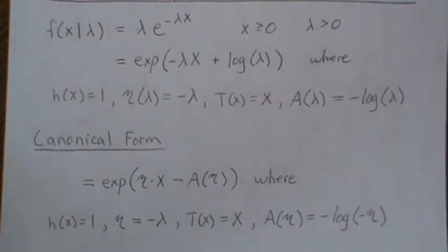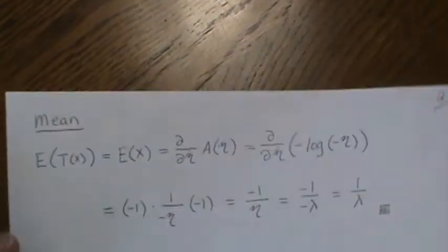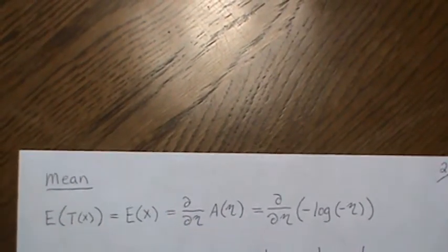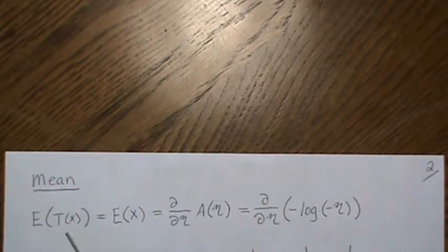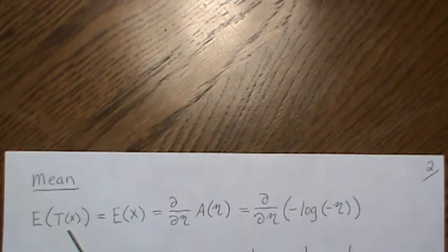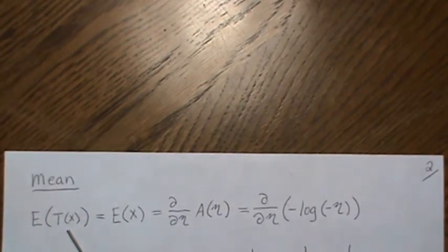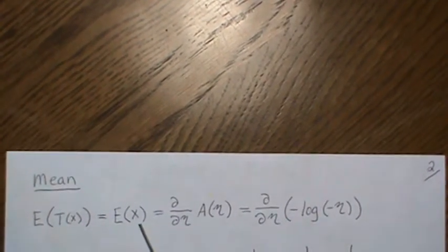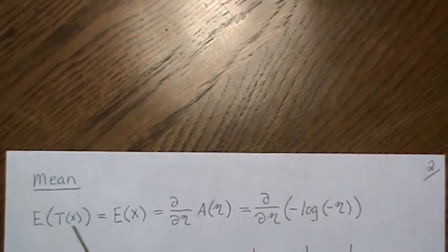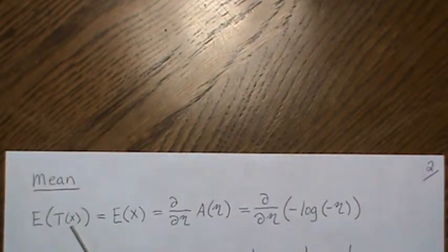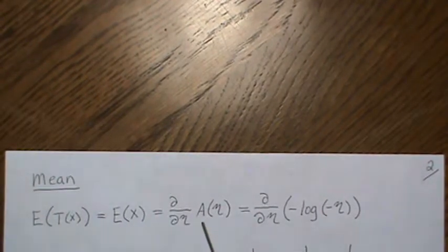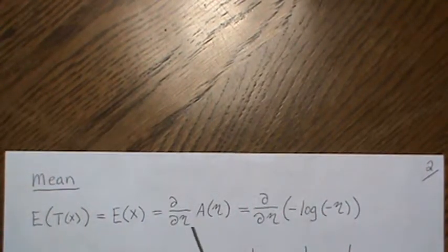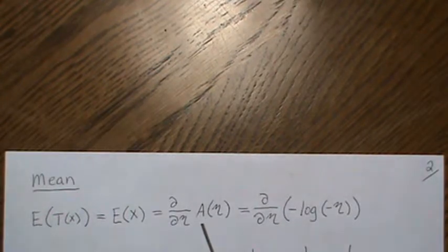Let's look at the mean of our sufficient statistic. I emphasize it like that because the function of our data in this case is just X, but it's not always that case. I'm trying to emphasize it's the mean of our sufficient statistic, which is the derivative of our log partition with respect to eta.